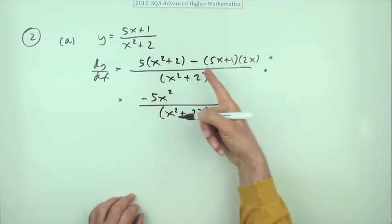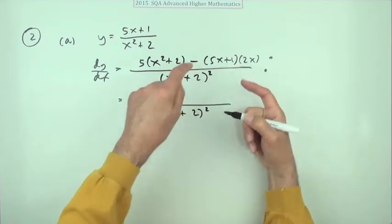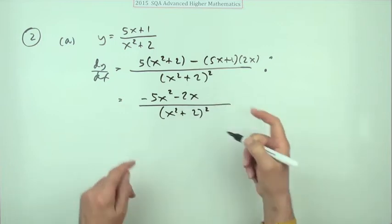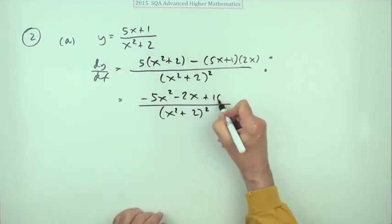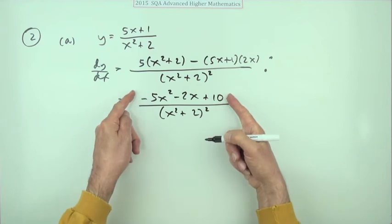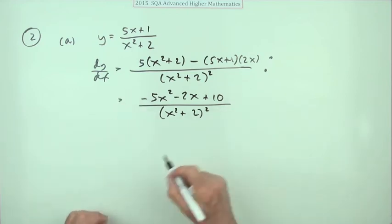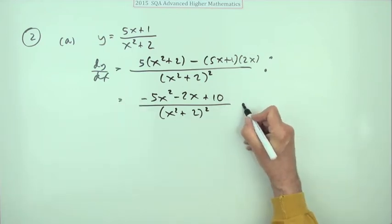Don't like that. The only x term comes from here, minus 2x, and the only number part comes from here, plus 10. And that doesn't factorize, so that's it done. That's your final mark.